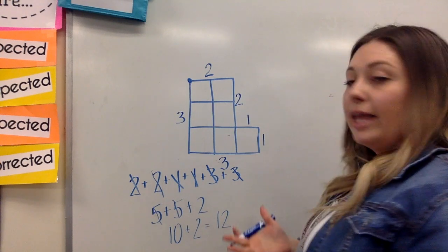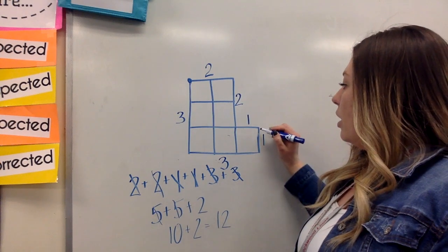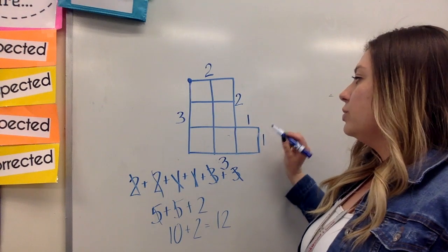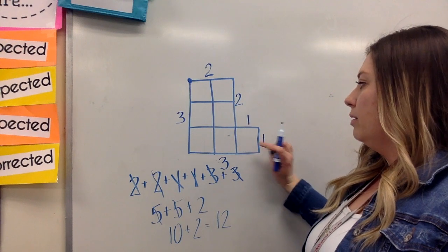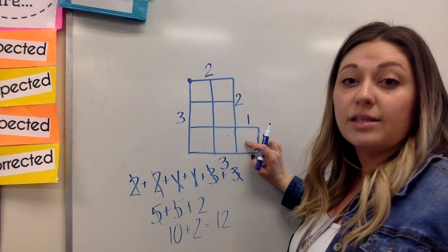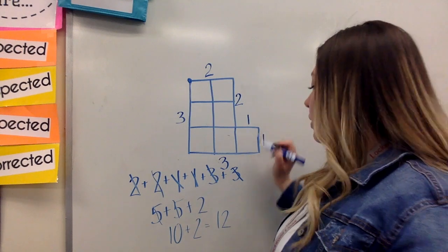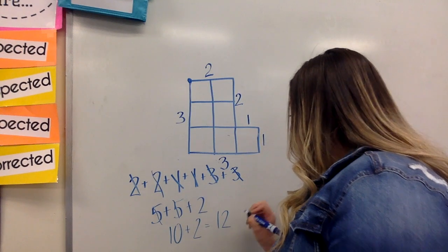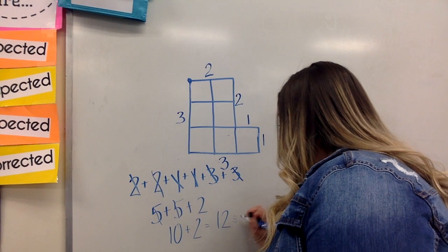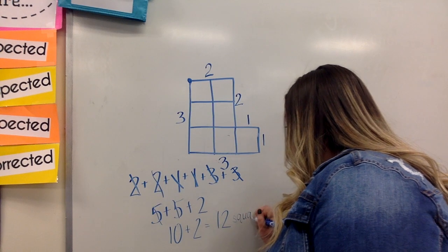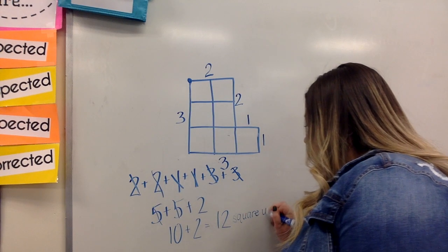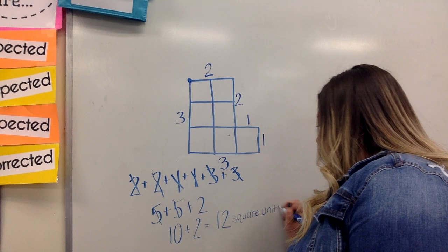And so for my label this time, these are square units, so that means each one of these sides on this unit is equal, and it's a square. So we're going to label it as square units for the perimeter.